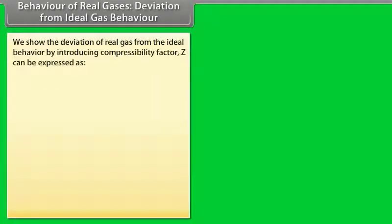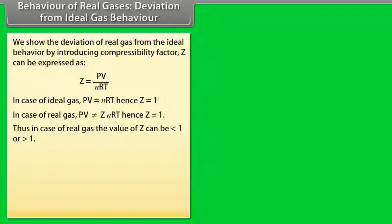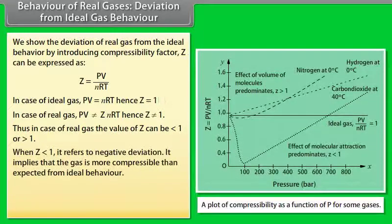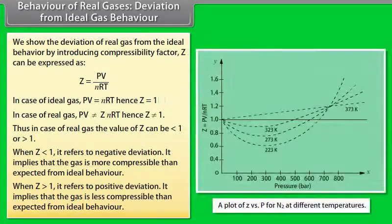Behavior of real gases — Deviation from ideal behavior: the compressibility factor Z = PV/NRT. For an ideal gas, PV = NRT, so Z = 1. For a real gas, PV ≠ NRT, so Z ≠ 1. The value of Z for a real gas can be less than 1 or greater than 1. When Z < 1, it refers to negative deviation — the gas is more compressible than expected from ideal behavior. When Z > 1, it refers to positive deviation — the gas is less compressible than expected.